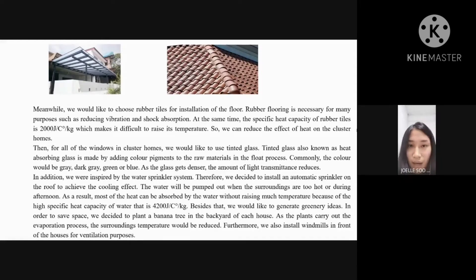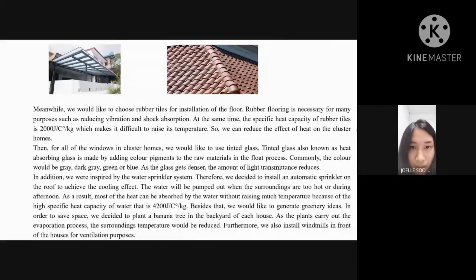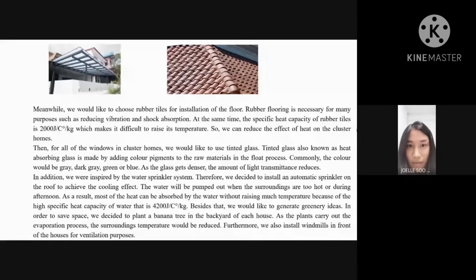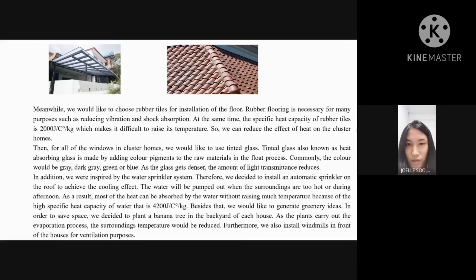In addition, we were inspired by the water sprinkler system. Therefore, we decided to install an automatic sprinkler on the roof to achieve a cooling effect. The water will be pumped out when the surroundings are too hot or during the afternoon. As a result, most of the heat can be absorbed by the water without raising much temperature, because of the high specific heat capacity of water, which is 4,200 J per °C per kilogram.